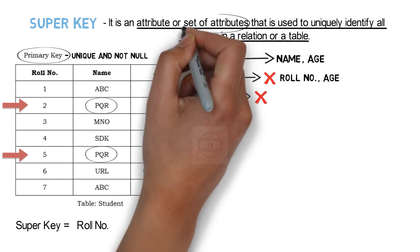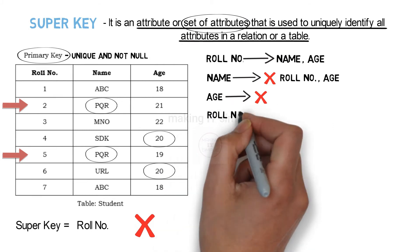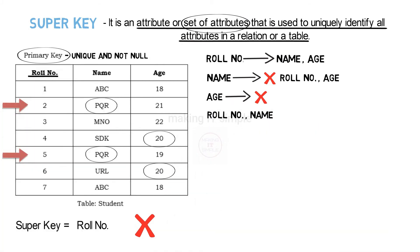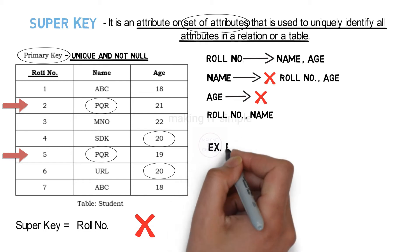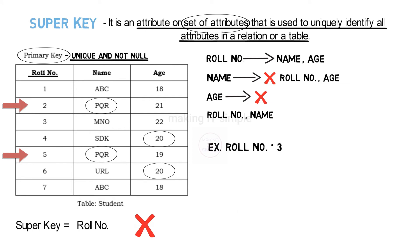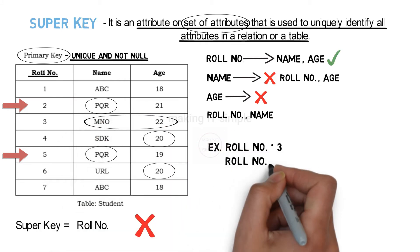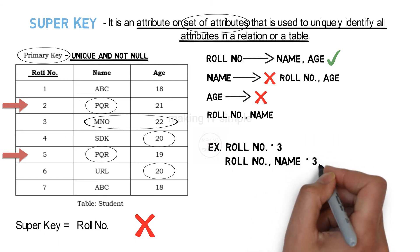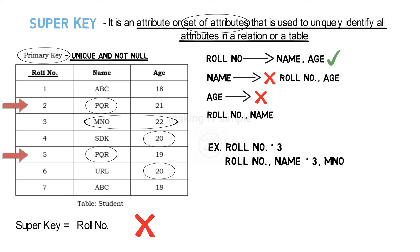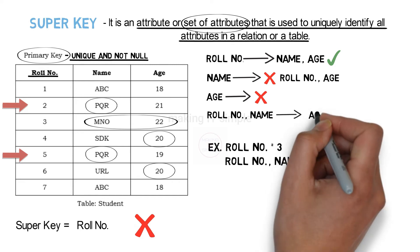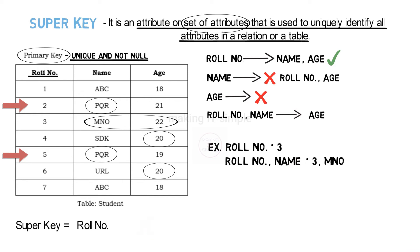As stated in the definition, we can have a set of attributes. So now let us consider role number and name together. As there is a primary key attribute in this set, which will always be unique and will never have a null value, combining it with any other attribute we can identify the remaining attributes. For example, role number 3 — in this table there won't be any other student with role number 3. So using role number 3 we can identify name and age. When we consider role number and name together, it will also be unique — there will not be any record having role number 3 and name MNO. So using role number and name we can identify a unique tuple and therefore identify age. So the set {role number, name} is also a super key.